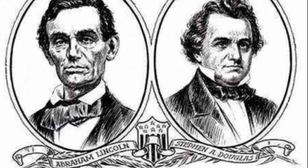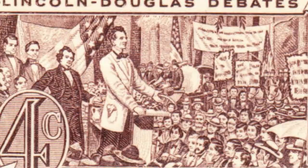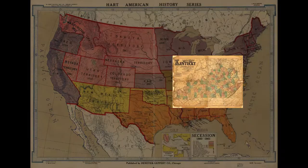In 1858, Abraham Lincoln ran for the United States Senate, and he was actually defeated by Stephen A. Douglas. Lincoln, a native of Kentucky, had also lived in Indiana and Illinois.